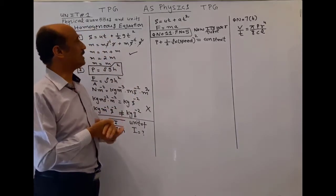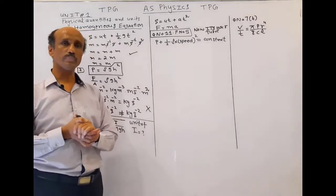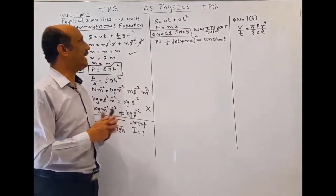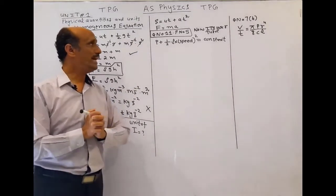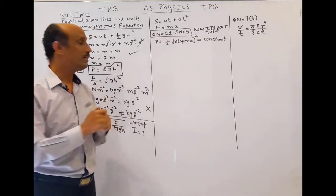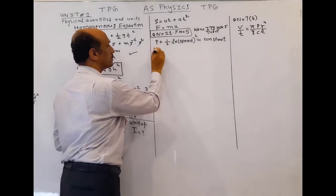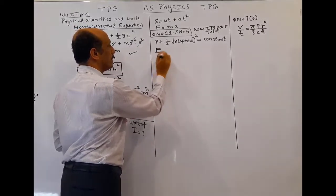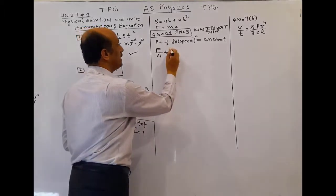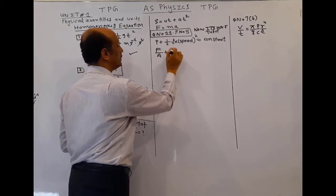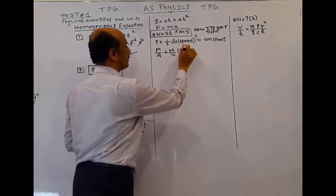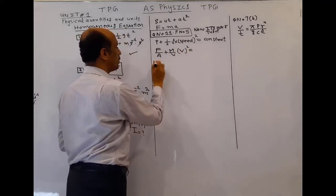This is question number 11 from the book by Mike Crundell and Chris Mee, second edition, page number 5. It states: p + ½ρv² = constant. What is the unit of this constant? Pressure equals force over area, and density equals mass per unit volume. Let me solve that.